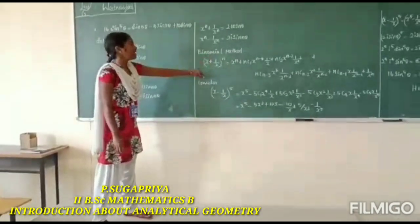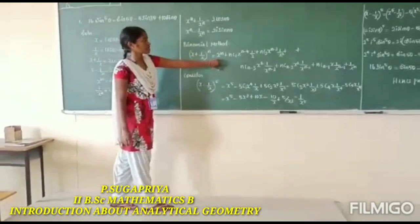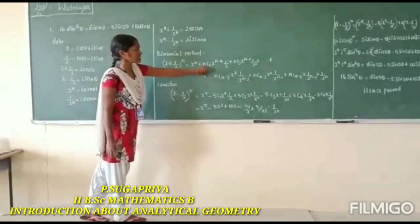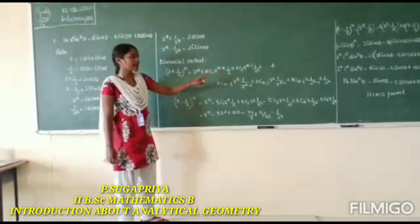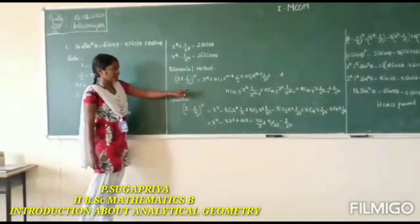We know the binomial formula: (x plus 1 by x)^n equals x^n plus nC1 x^(n-1) times 1 by x plus nC2 x^(n-2) times 1 by x^2, and so on.